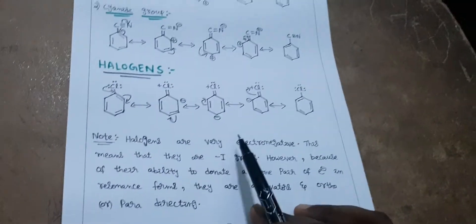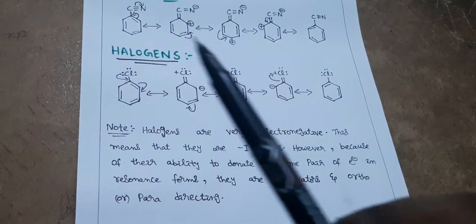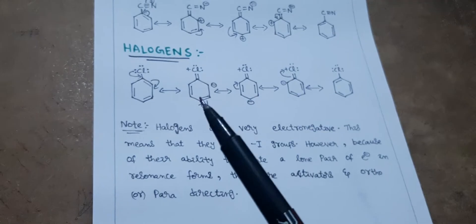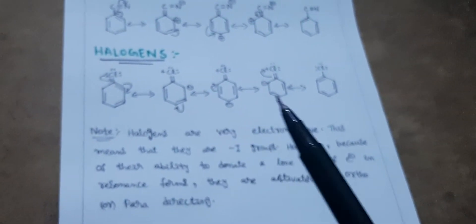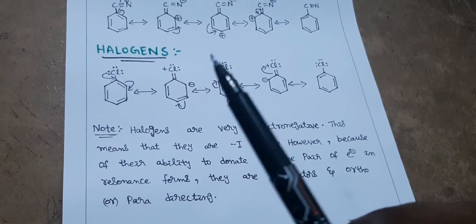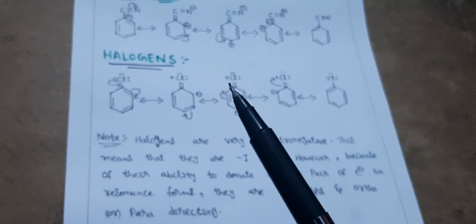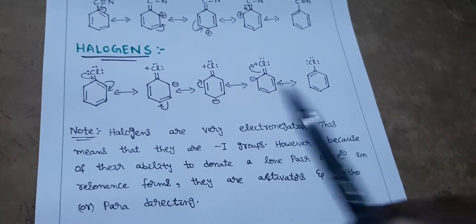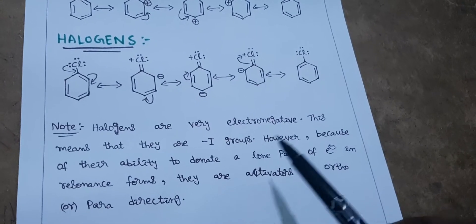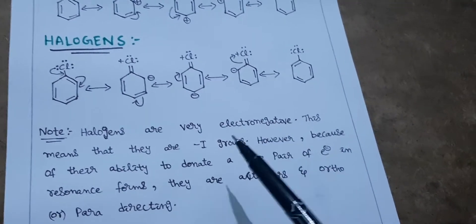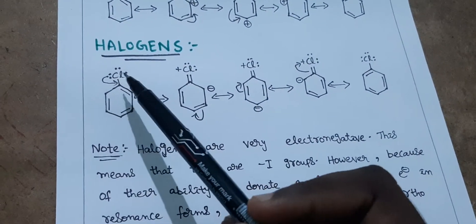Now, halogens — I said these should be discussed separately because there is a twist. These halogens show minus-I effect, meaning they are minus-I groups. But generally, minus-I groups are meta directing. However, these groups are actually ortho and para directing. You might ask: meta directing groups are electron withdrawing and show minus-I effect, while ortho-para directing groups are electron donating and show plus-I effect — how can halogens mix both?